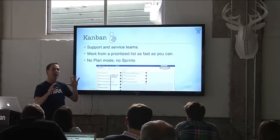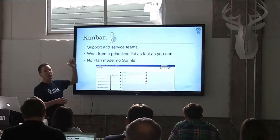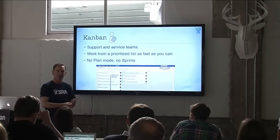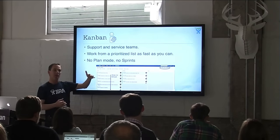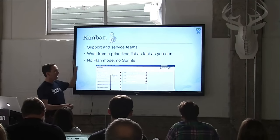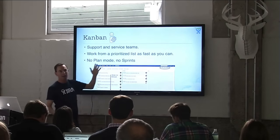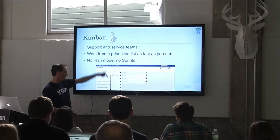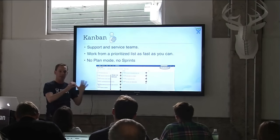Kanban teams are like Scrum teams except they don't have a target date they're working toward. Support and service teams are generally teams with a list of work that's always getting new items, and they prioritize it and work through it as fast as they can. With a service team, how many tickets are going to be done by next Friday is way less important than making sure they're in the right order and the team is working through them as fast as they can. Kanban doesn't have a plan mode — you just prioritize and work as fast as you can. Your to-do list in a Kanban board goes on forever, whereas in Scrum your to-do list is only the things you've decided to do in this sprint.